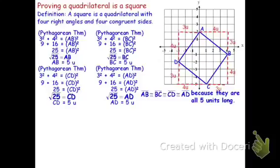Now that's the property of a rhombus. I've met the definition of a rhombus — we have four congruent sides. But in order to show it's a square, I also have to show that it has four right angles. In order to show it's a right angle, you've got to show that the segments that make it are perpendicular. But how do I prove they're perpendicular?